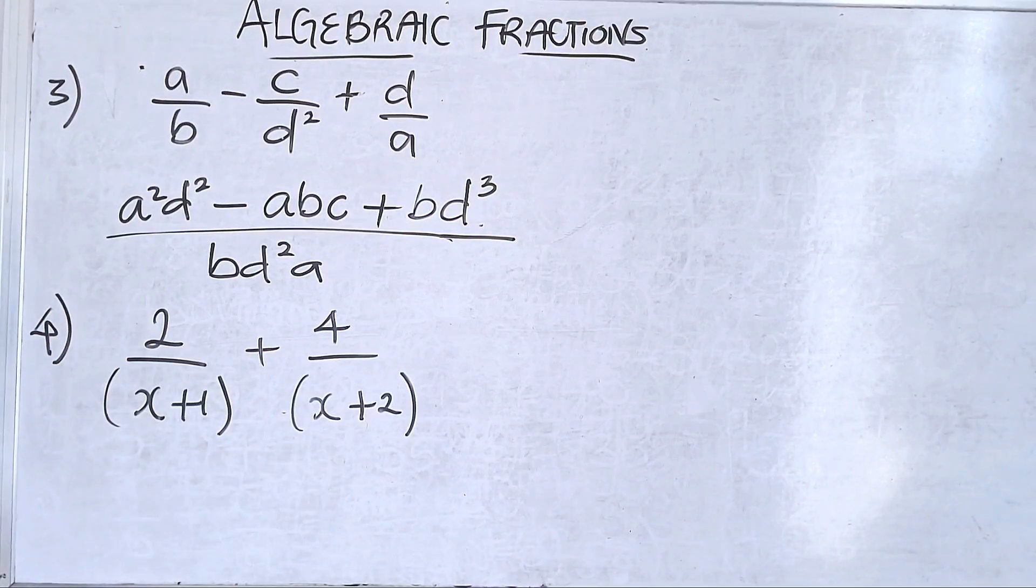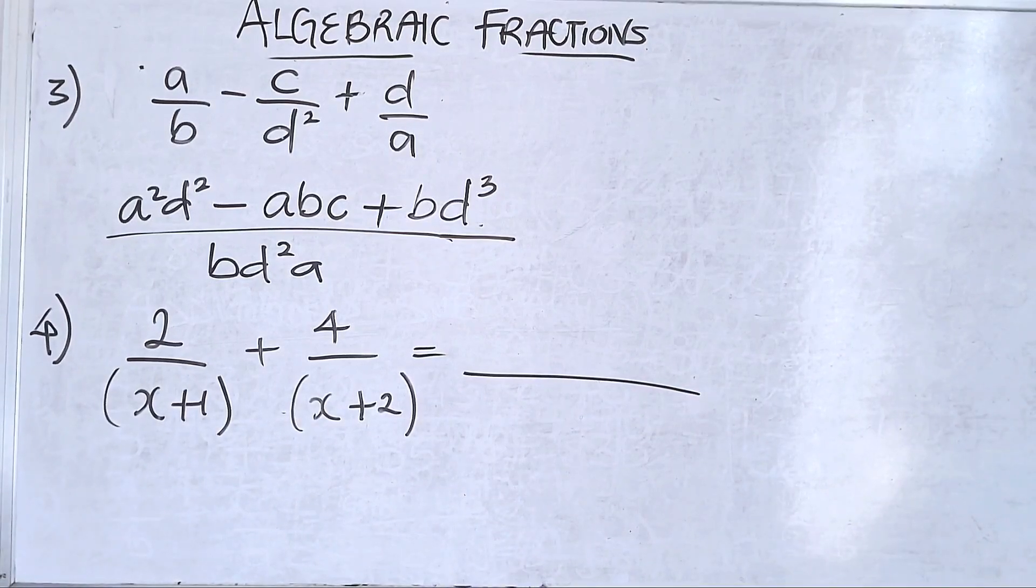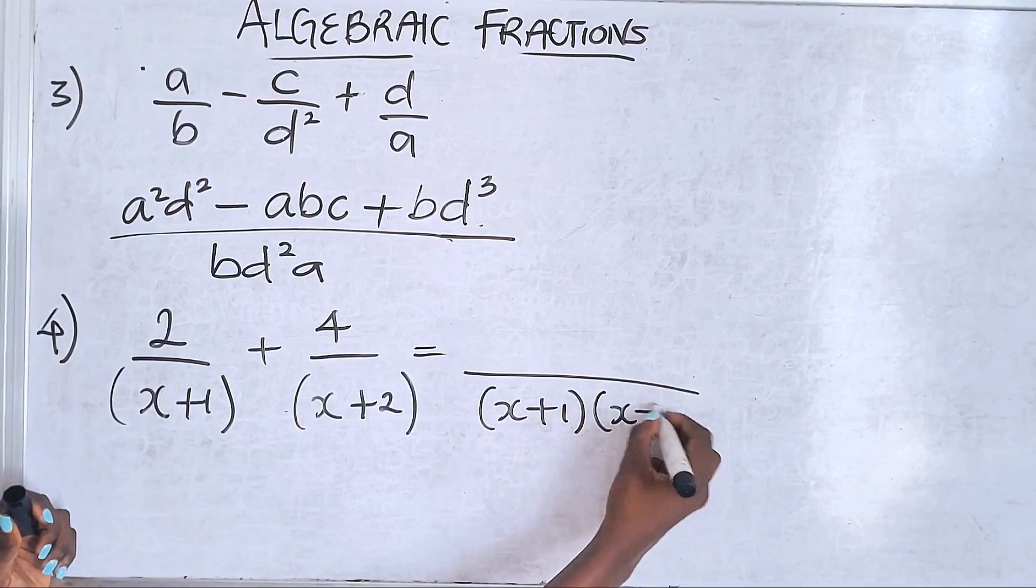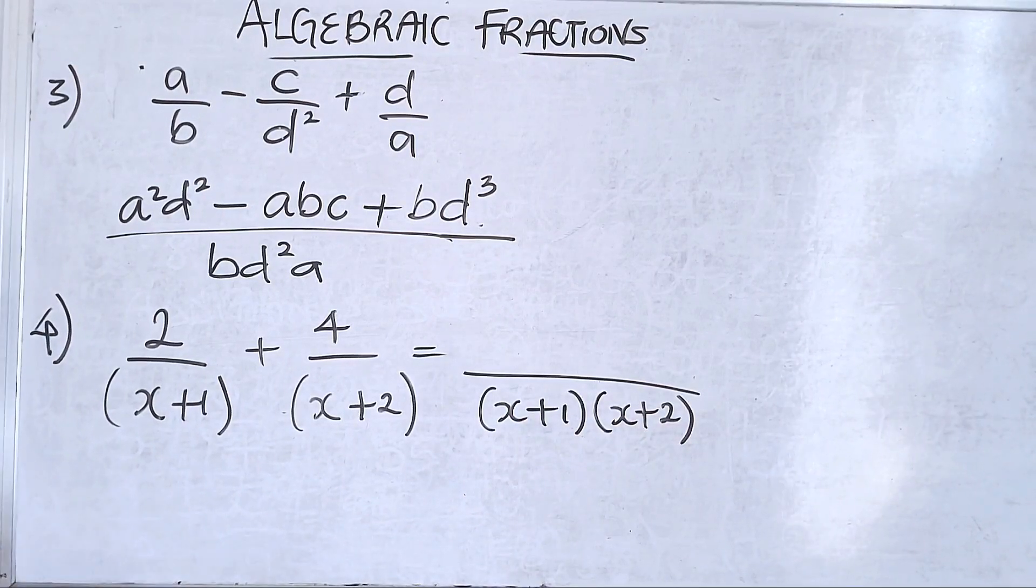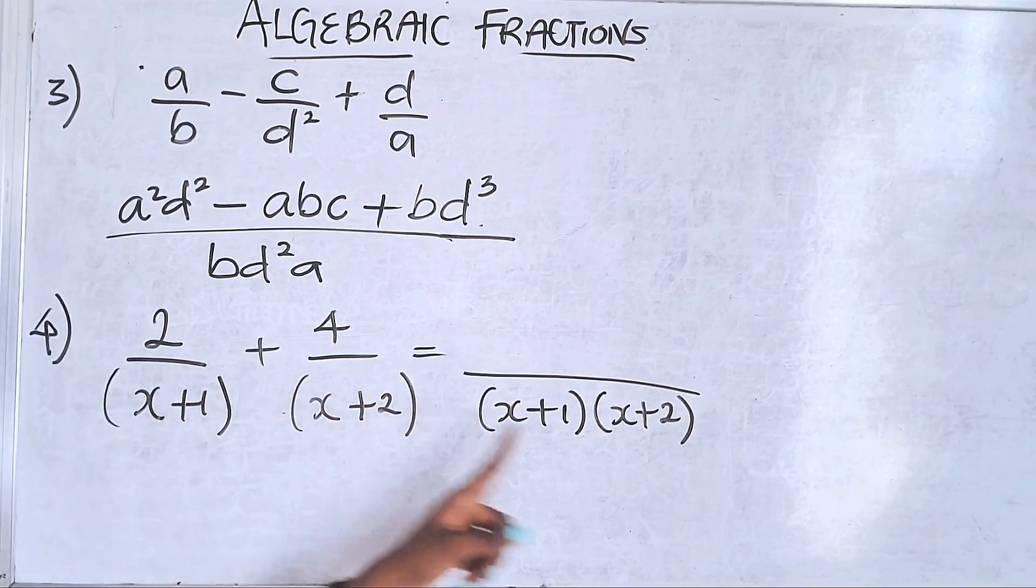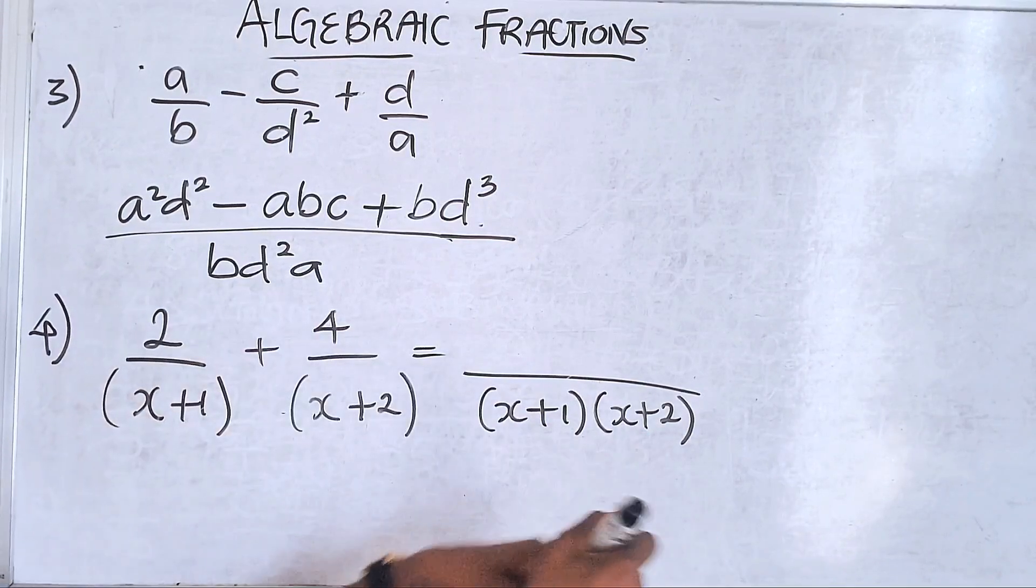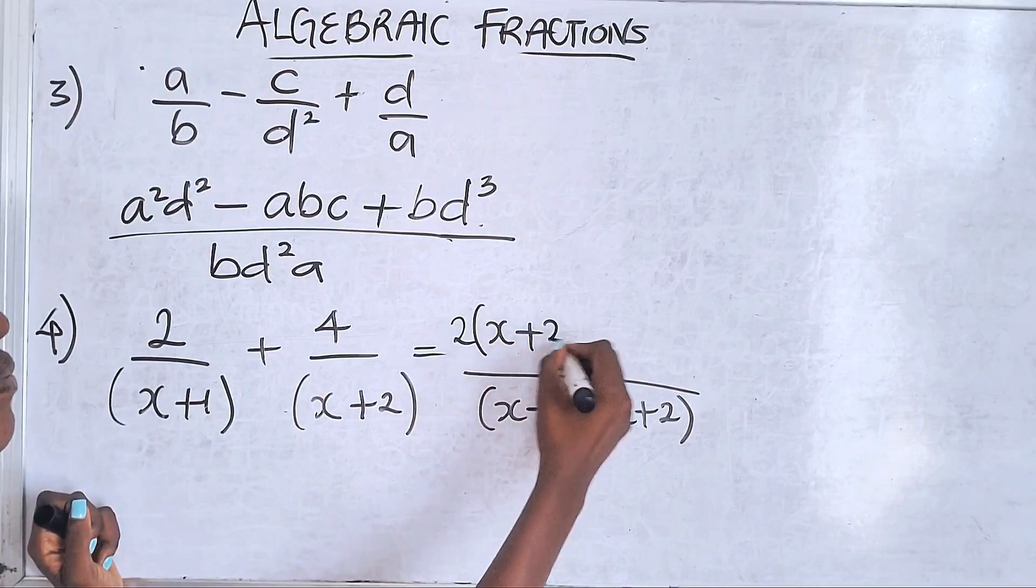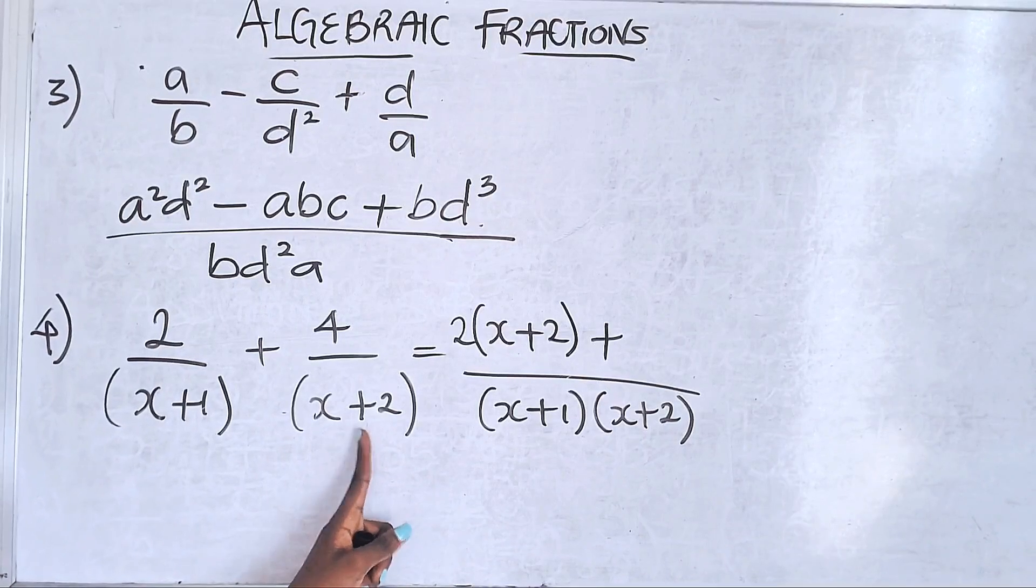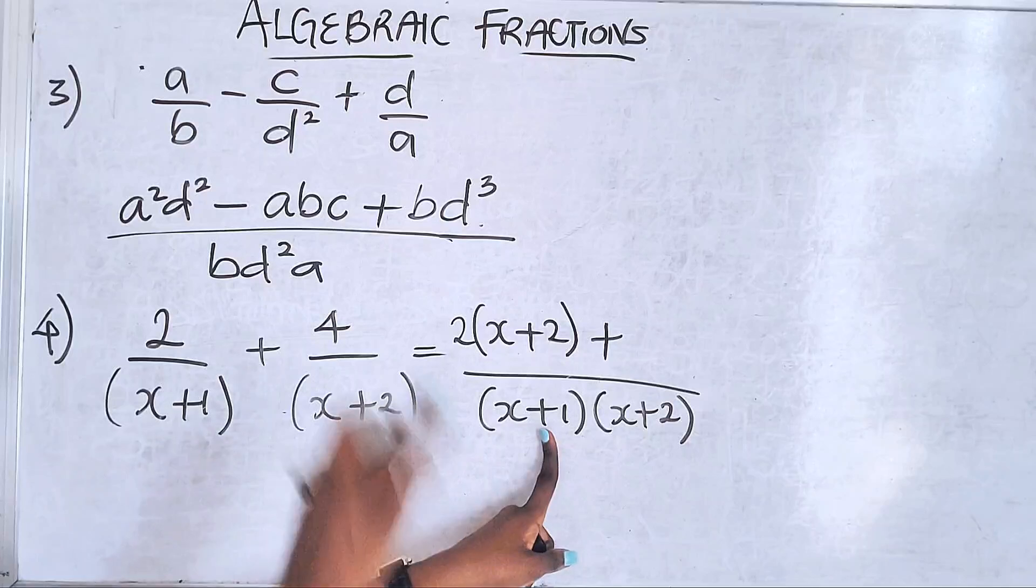In this case, first find your LCM. In this case, it's multiplying these two, which is (x plus 1)(x plus 2). After you're done, ask yourself how many times the first fraction's denominator can go here. This cancels, you're left with this, so this times the numerator is 2x plus 4. Plus, moving to the next fraction, this cancels this, you're left with this times the numerator, which is 4x plus 4.